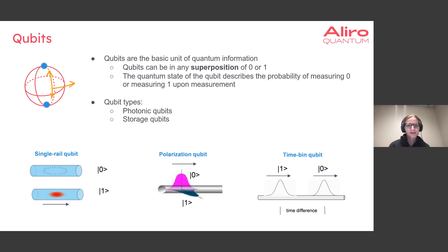Let's start with qubits and review what qubits are. Qubits are the basic unit of quantum information and they can be in any superposition of zero or one.